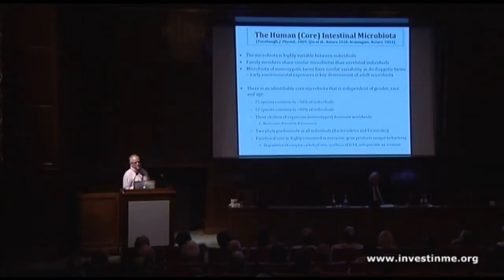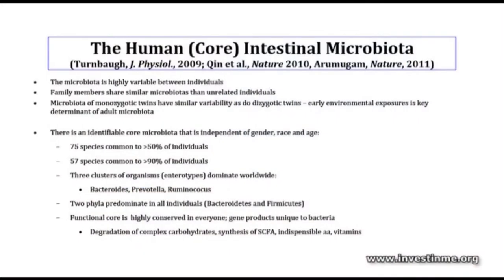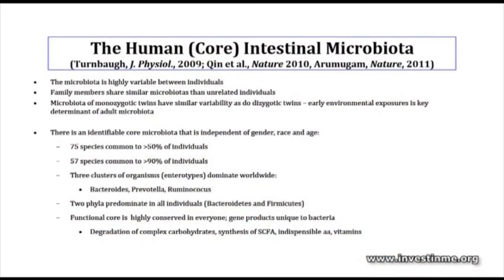The microbiota is highly variable between individuals — everybody has a unique microbiota. However, we do share some common elements: family members share more similar microbiotas than unrelated individuals. Even monozygotic twins have similar variability but are still distinct — highly similar but distinctive to two genetically identical individuals, which probably relates to environmental factors. We can identify a core microbiota that all of us have: 75 species common to about 50% of us, and about 50 to 60 present in the vast majority.